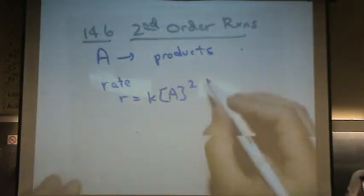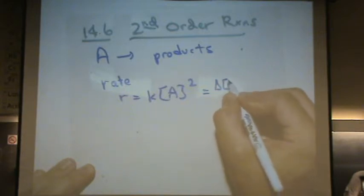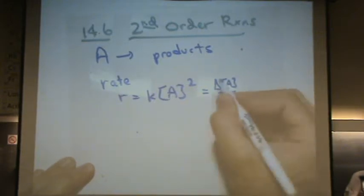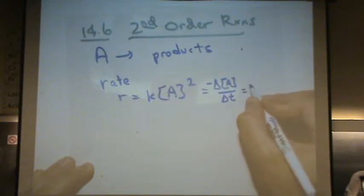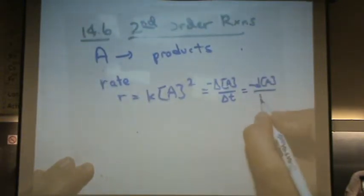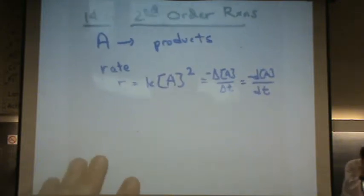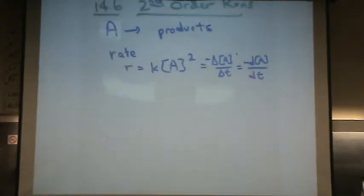And if we set that order equal to our previous definition, change in A over change in time, or for small infinitesimal changes, dA over dt, this is called the differential rate law for second order. We're not going to use that in this class, but it'll help me do this following derivation.